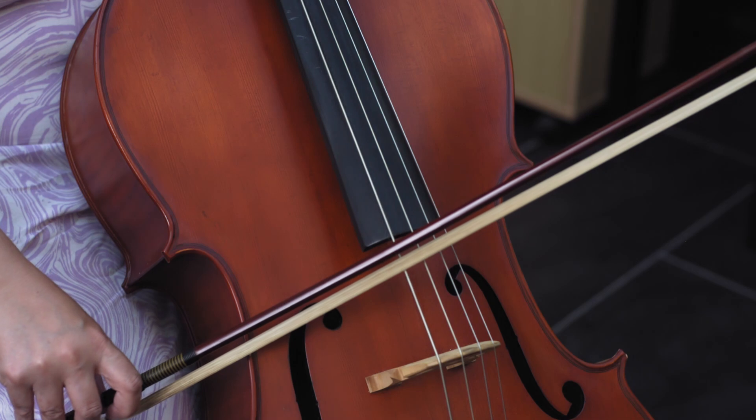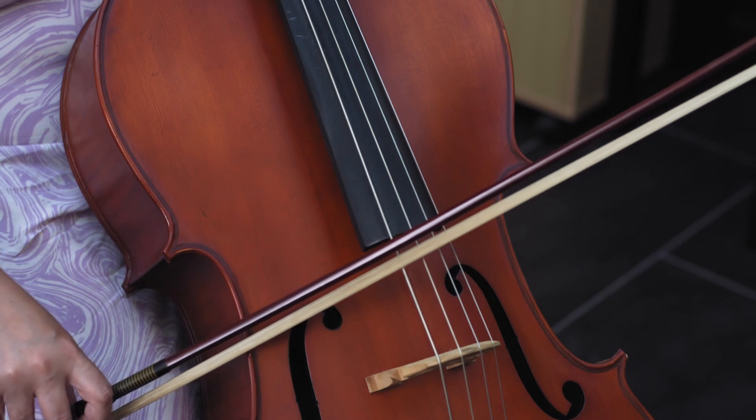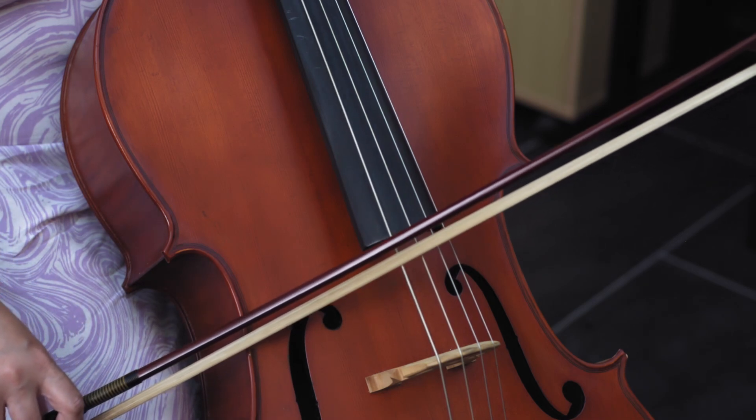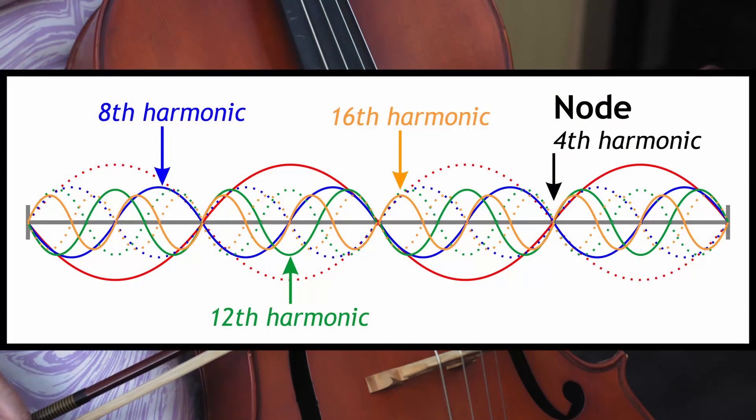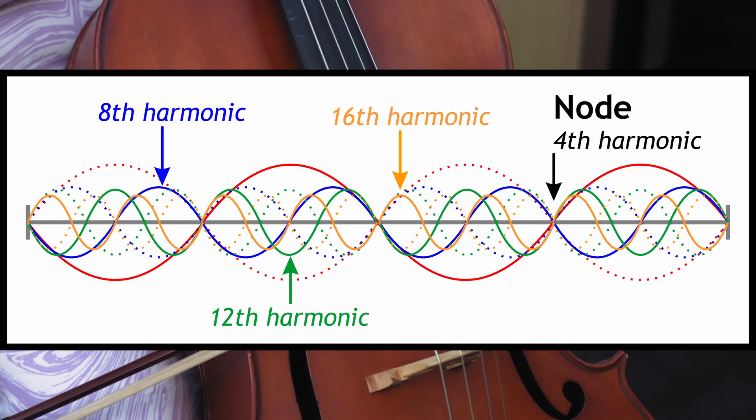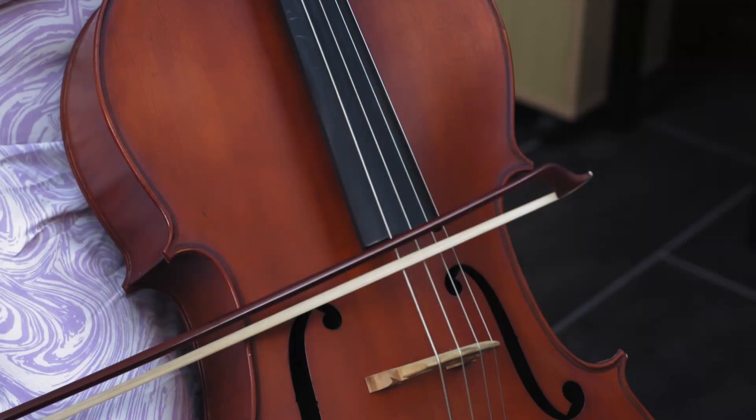Because the string has been forced to divide into quarters, it also prevents other harmonics from vibrating too, such as the 5th, 6th and 7th ones. Only ones that share the same node will be able to vibrate, so 8ths or 12ths would be fine. In doing this, the sound quality is affected and there are changes to its timbre.